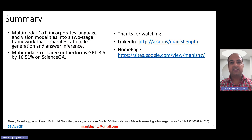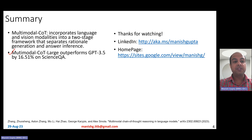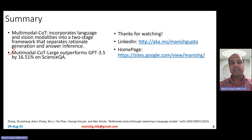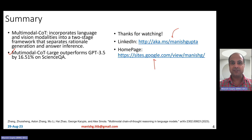In summary, this video covered the multimodal CoT model, which incorporates language and vision modalities into a two-stage framework that separates rationale generation and answer inference. Multimodal CoT has been shown to outperform GPT-3.5 by 16.51 percent on the ScienceQA dataset, although the multimodal CoT large model is just around 800 million parameters while GPT-3.5 has 175 billion parameters. Hope you liked the video — connect with me on LinkedIn or look at my research on my homepage.